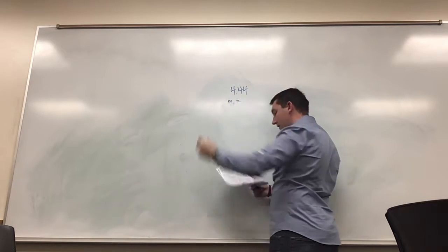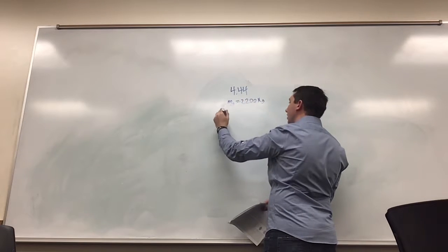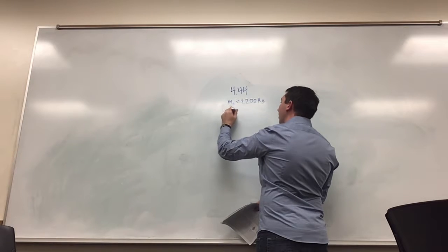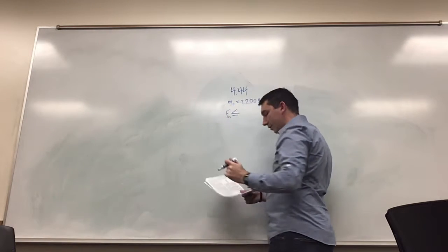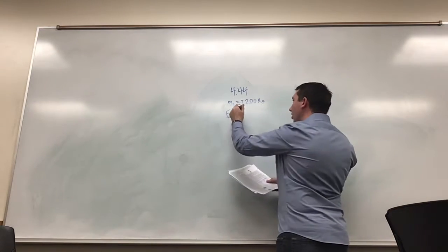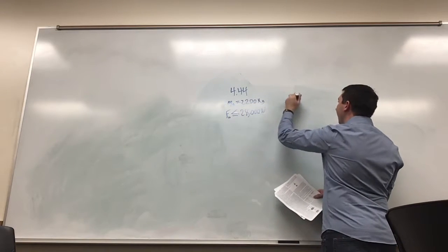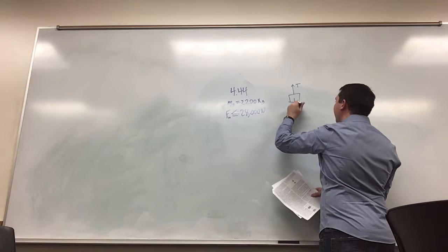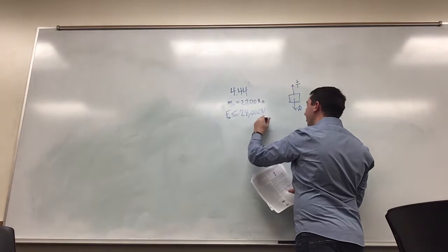And the force on the cables must be less than or equal to 28,000 newtons. So we have our elevator with an upward tension and downward weight. The sum of the forces is going to be equal to the mass times the acceleration.